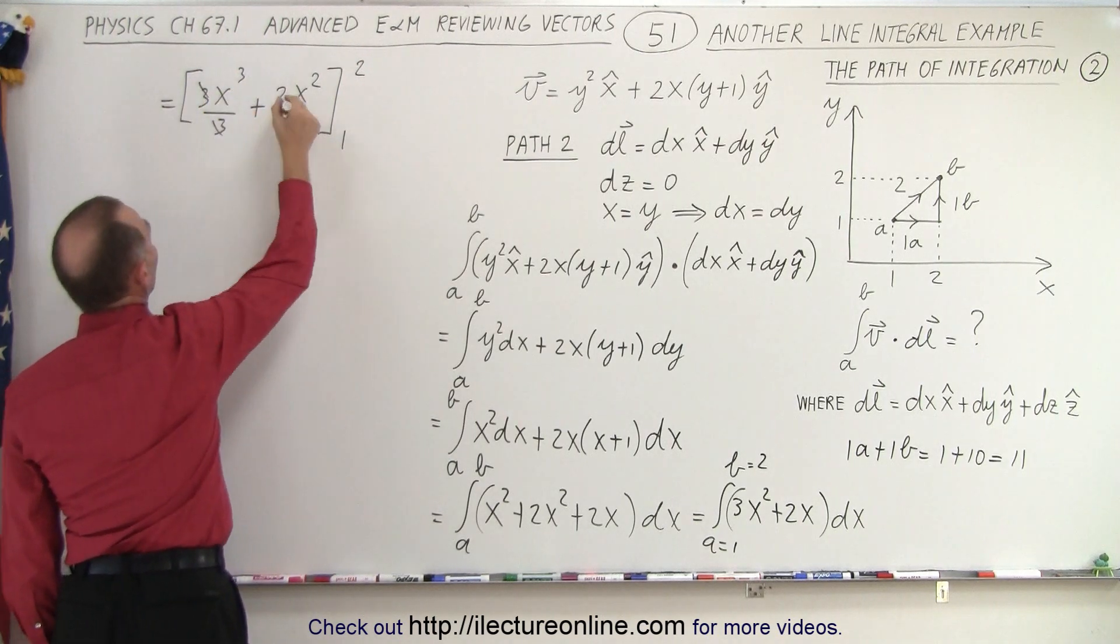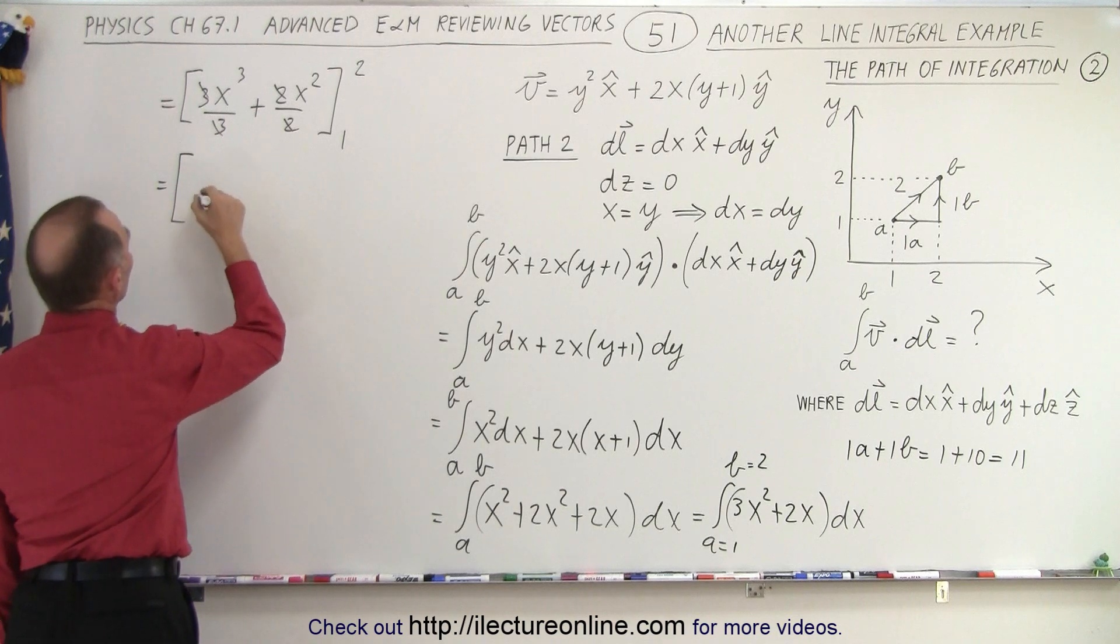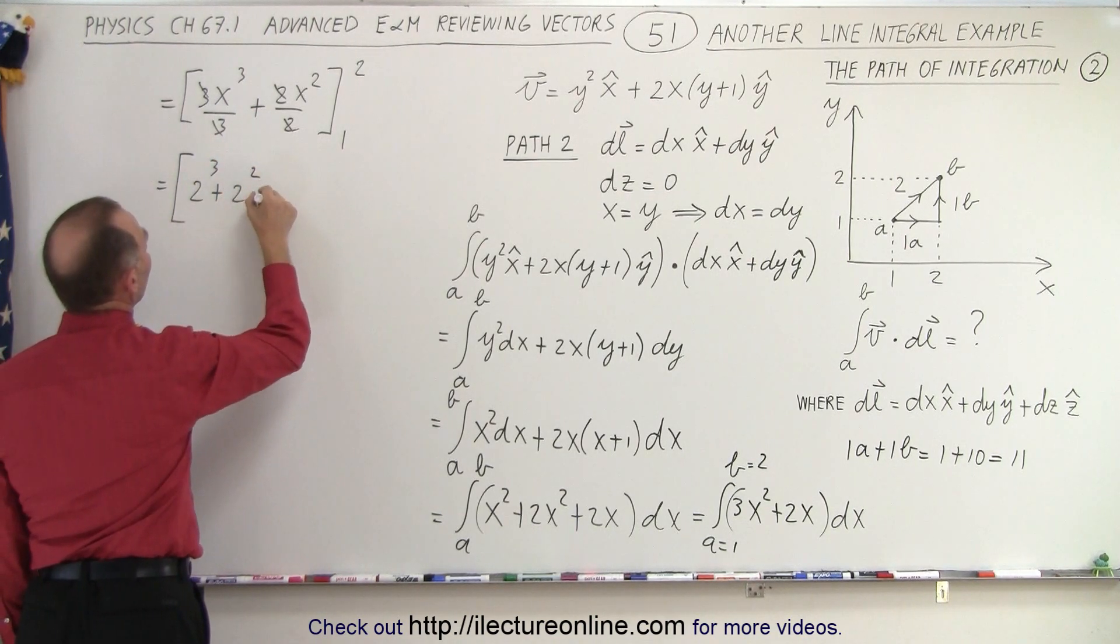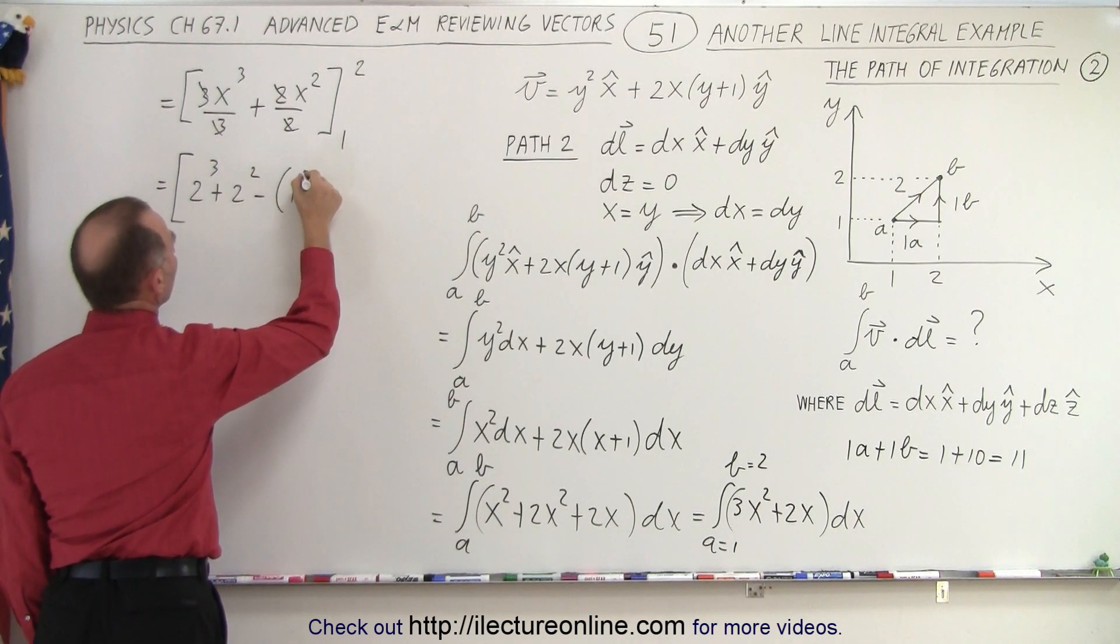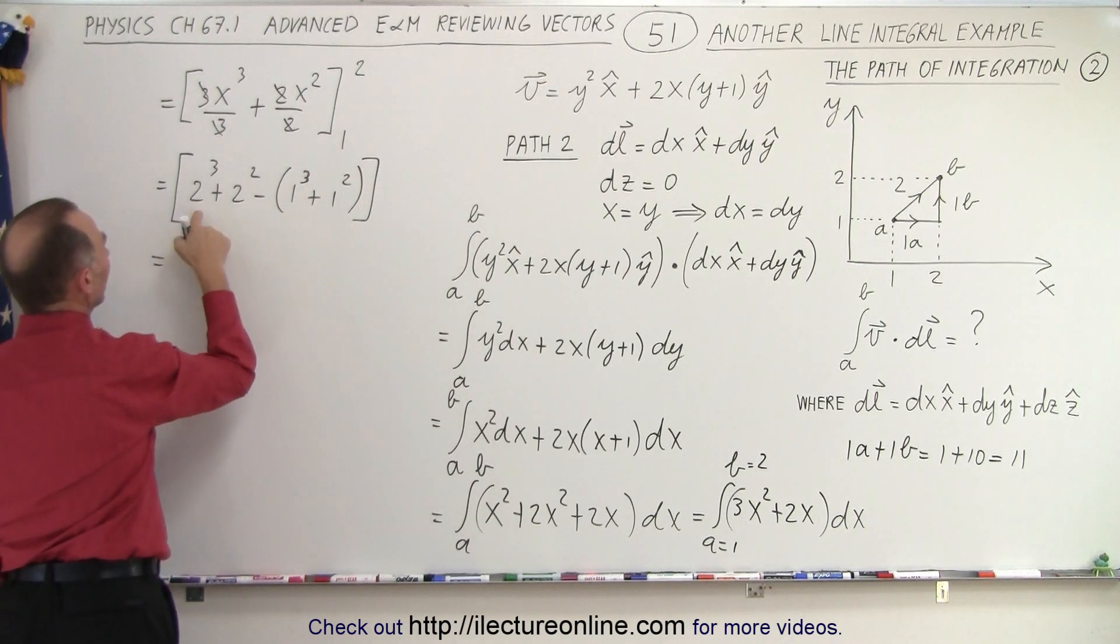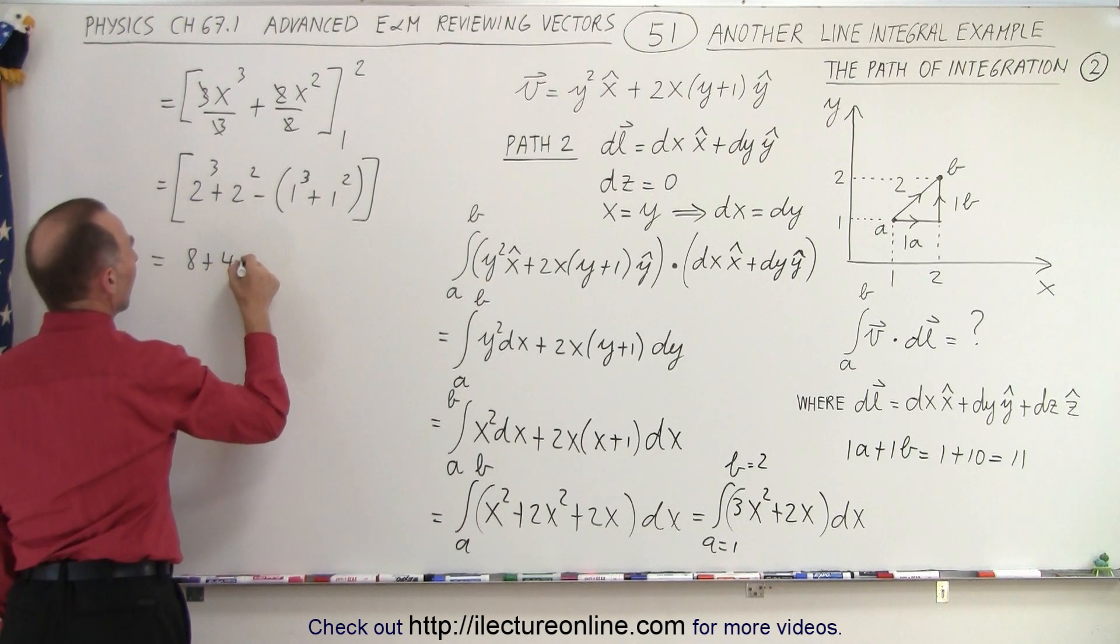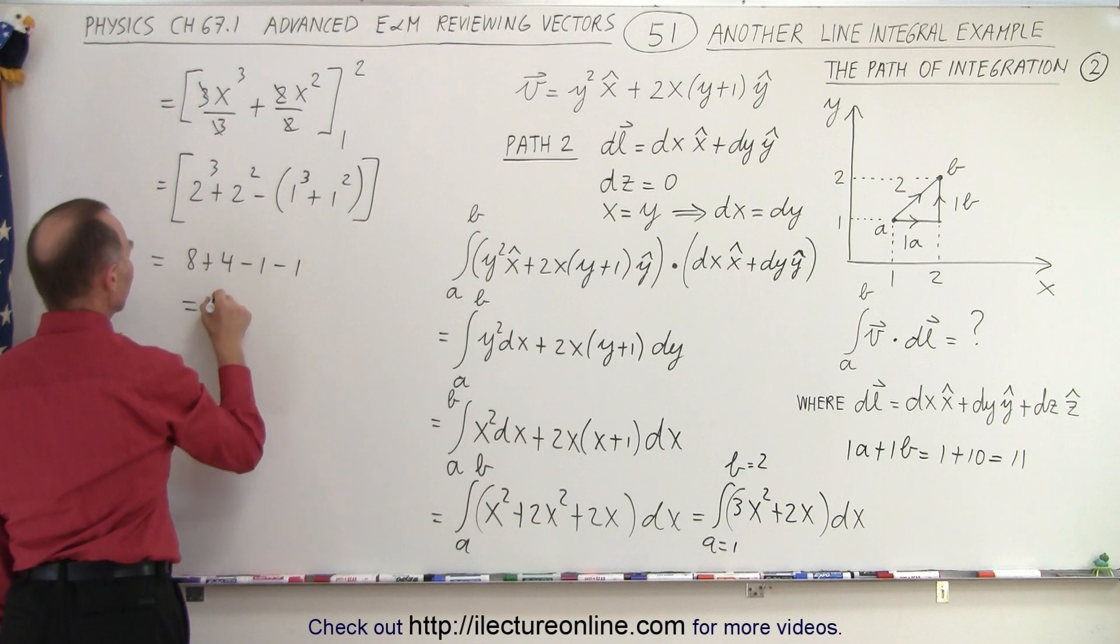Now the 3s cancel out, the 2s cancel out, makes it a little bit easier. And so this becomes equal to, when we plug in the upper limit, we get 2 cubed plus 2 squared, minus, plug in the lower limit, we get 1 cubed plus 1 squared. Okay, simplifying that: 2 cubed is equal to 8, plus 2 squared is equal to 4, minus 1, minus 1, that's 12 minus 2, that's equal to 10.